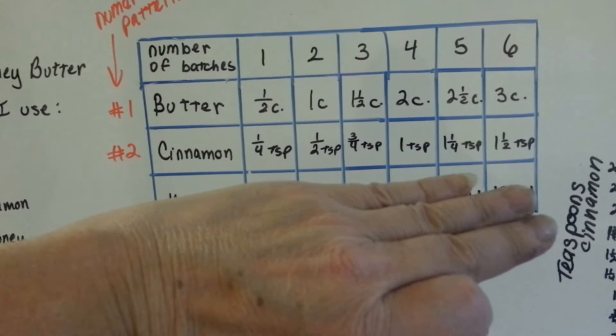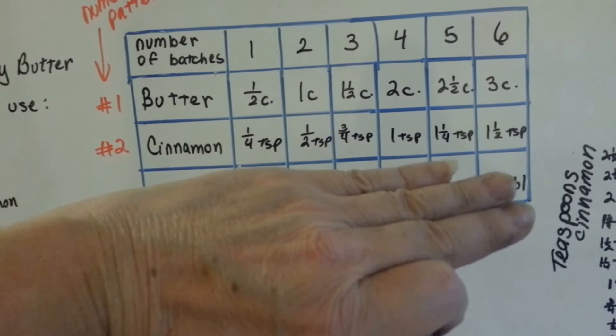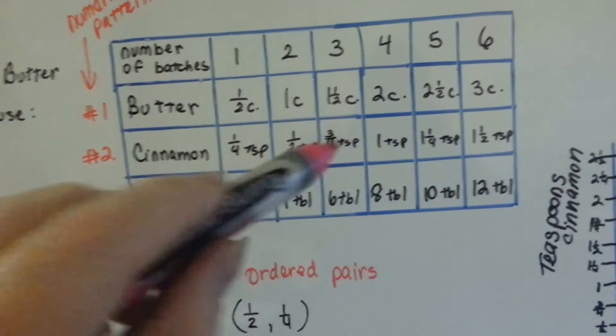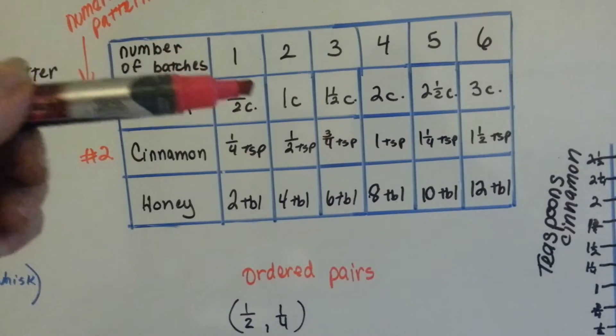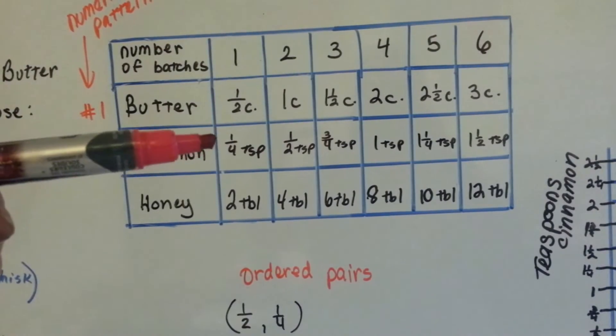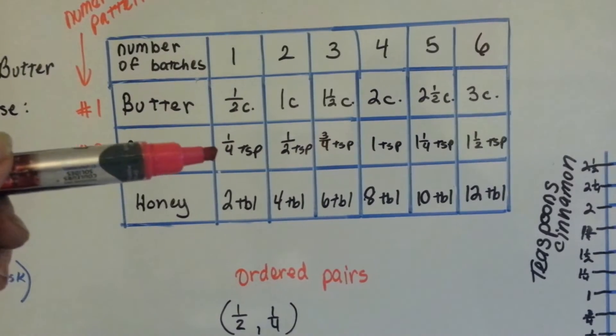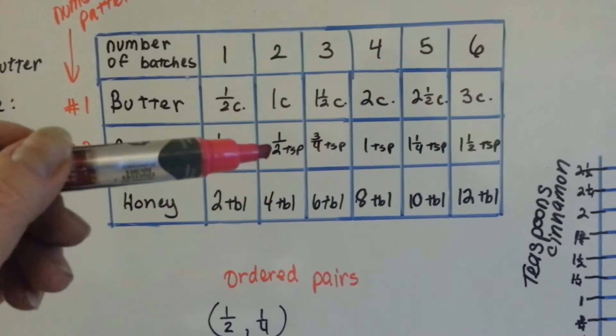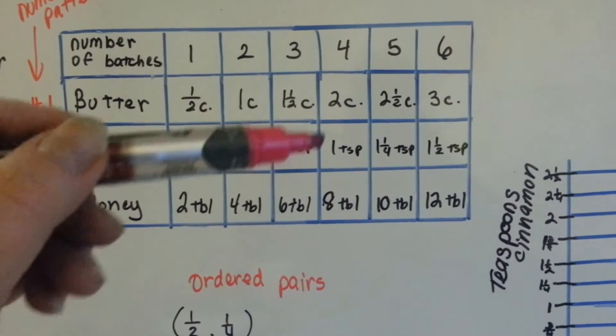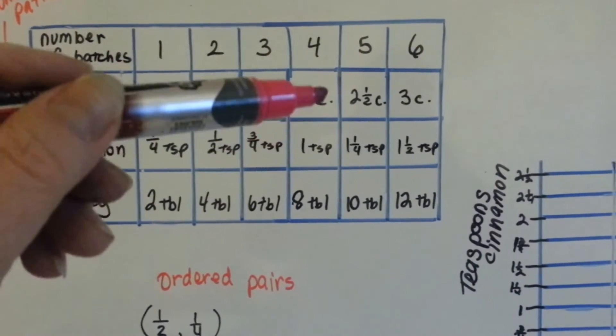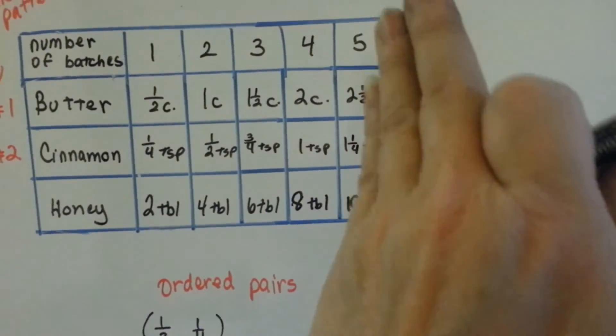If we make three batches, we use one and a half cups of butter and three-fourths teaspoon of cinnamon. Now, even though it's cups compared to teaspoons, if you look, the butter is double whatever the cinnamon is. Half is double what one-fourth is. One cup is double of a half. One and a half is double of three-fourths. Two is double one. So even though they're cups and teaspoons, the numbers are still doubled.